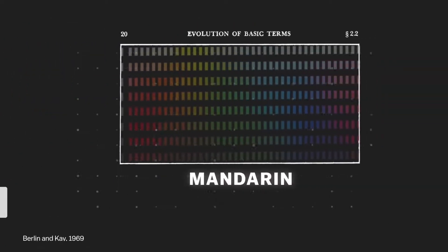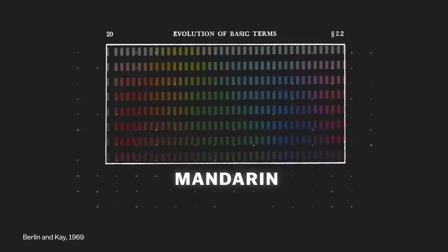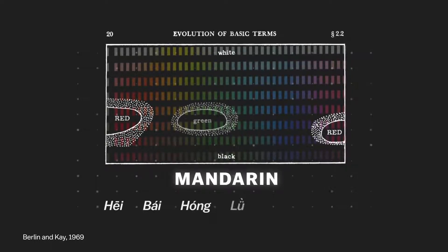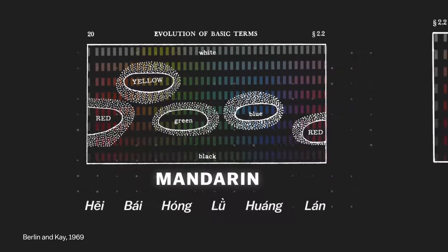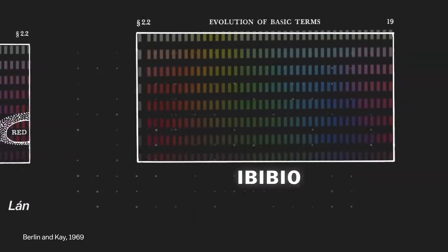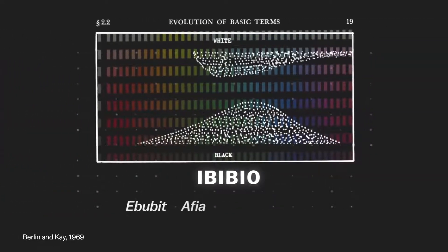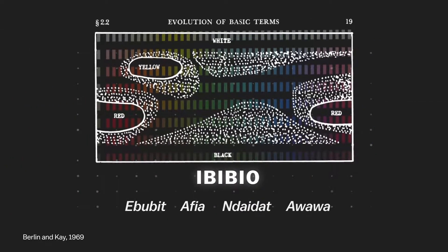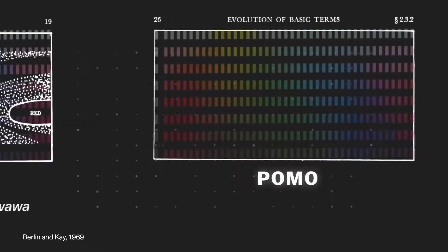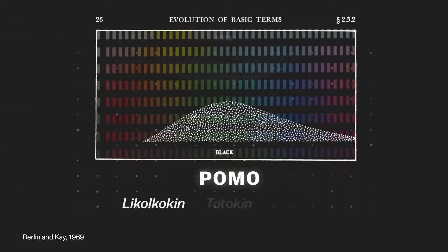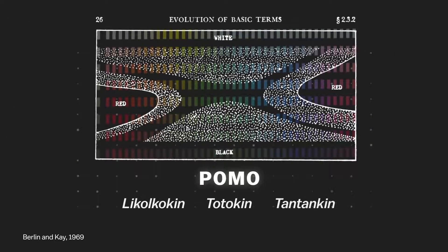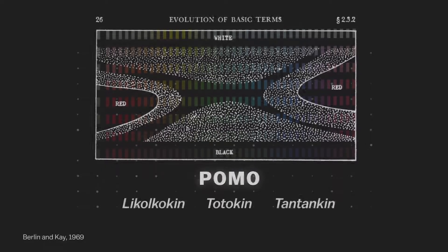If a language had six basic color words, they were always for black or dark, white or light, red, green, yellow, and blue. If it had four terms, they were for black, white, red, and then either green or yellow. If it had only three, they were always for black, white, and red. It suggested that as languages develop, they create color names in a certain order.